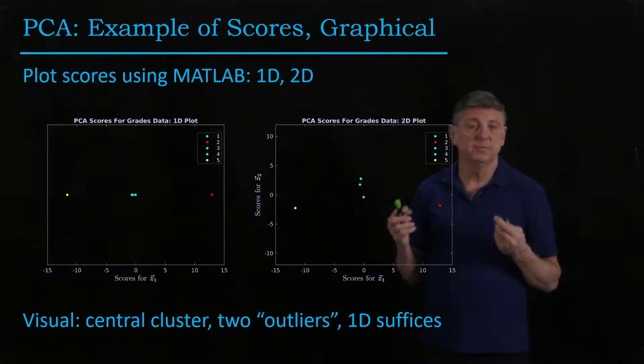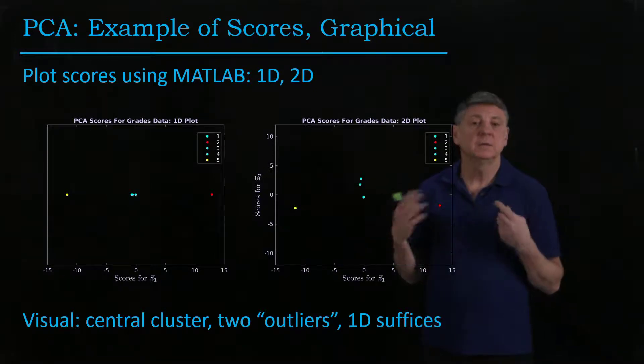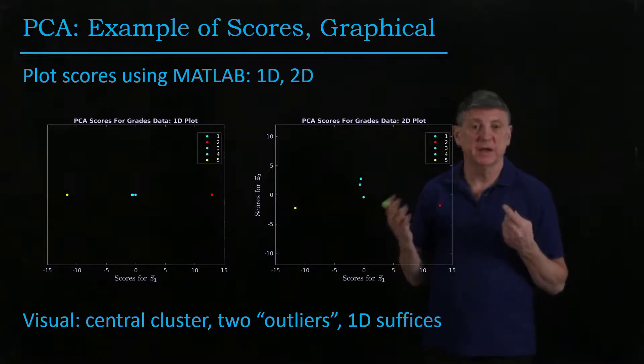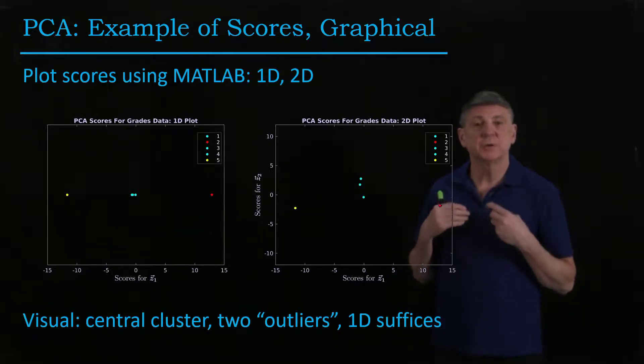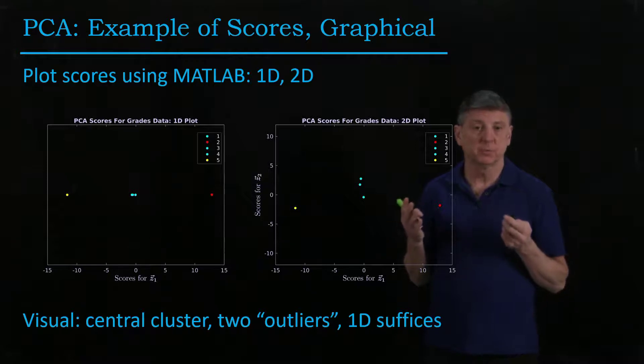We can conclude that based on our numerical evidence and visual confirmation, one dimension suffices for analyzing these data. That means we can just use a single score to capture most of the performance of these fictitious students.